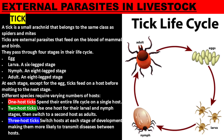Different species require varying numbers of hosts. One-host ticks spend their entire life cycle on a single host. Two-host ticks use one host for their larval and nymph stages, then switch to a second host as adults. Three-host ticks switch hosts at each stage of development, making them more likely to transmit diseases between hosts.